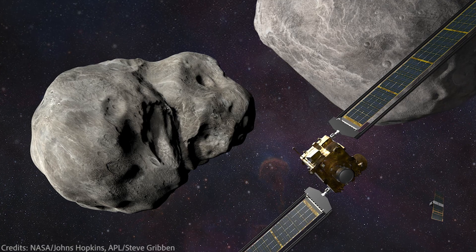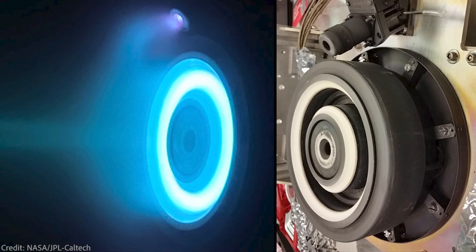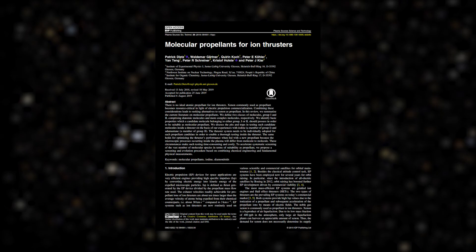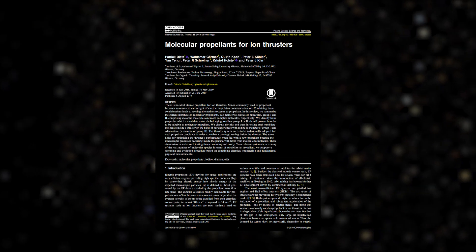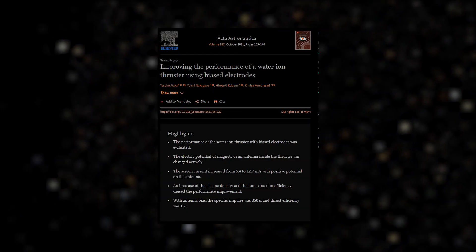Psyche mission will use Hall thrusters. And of course it is also a work in progress, and engineers and scientists are trying to come up with some new variants of fuel. Let's say instead of xenon atoms, molecules of other materials, or thrusters that use water or iodine.